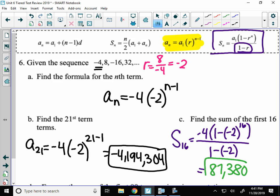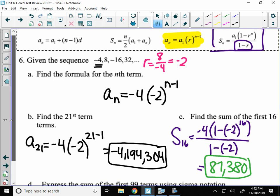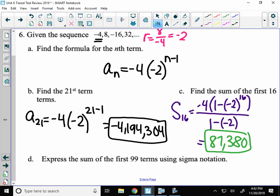87,380. The reason that number is smaller than the term, or much bigger, but the other one's like negative 4 million, and then we jump to 87,000, is because they're alternating signs. So as the negative part gets bigger, we have to then add on. It's just like keeping the sum smaller than you would think, but that's such a big negative term.